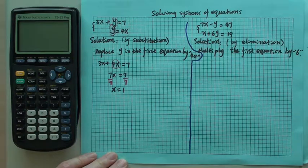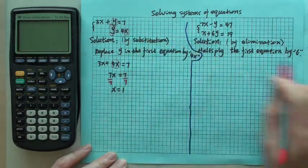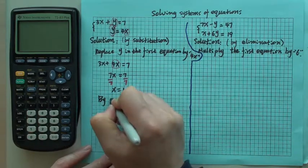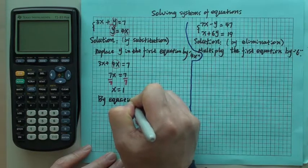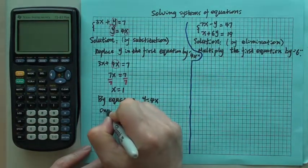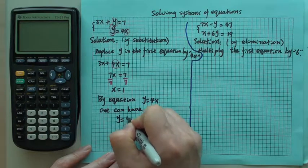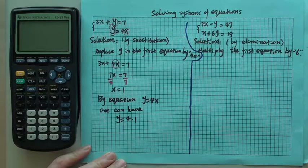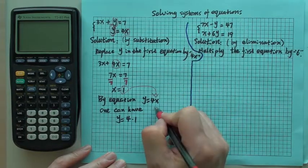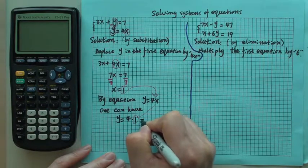Once x is 1, then we can put this one back here. So what we get is that, by equation y equals 4x here, one can have y equals 4x1. Again, you can mark it. And 4x1, we know that will be 1 times 4, which is 4.